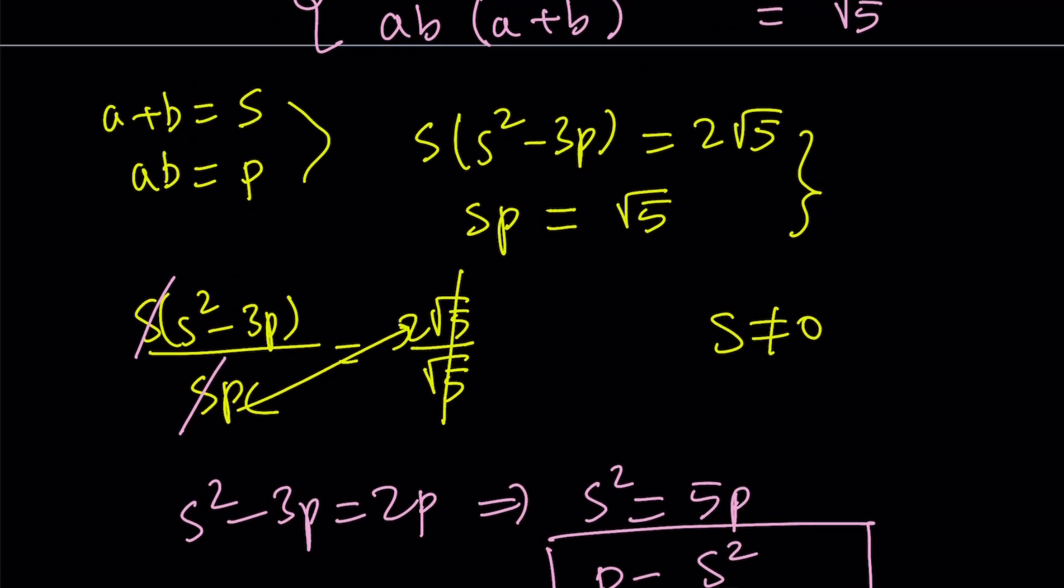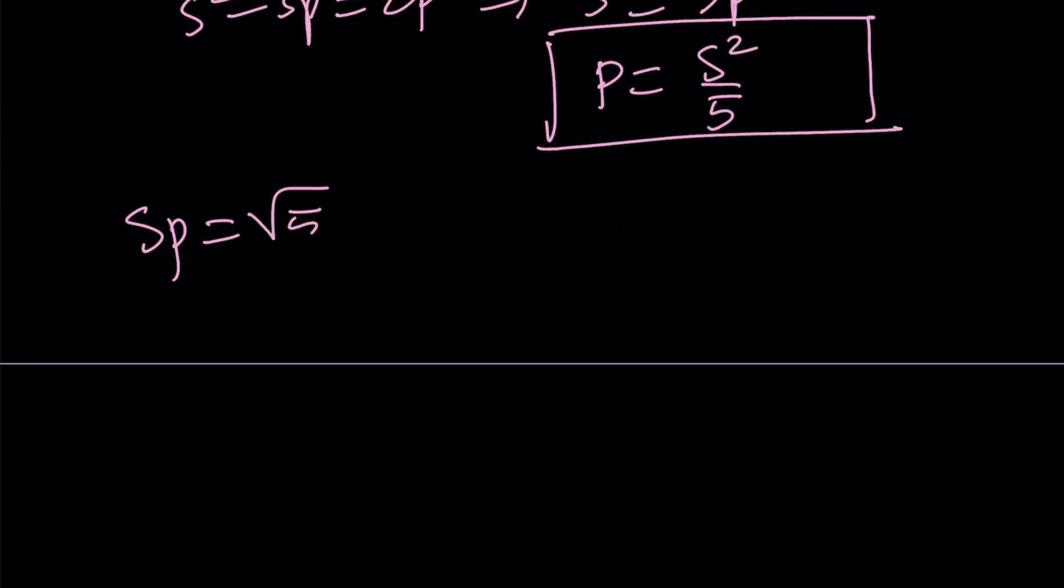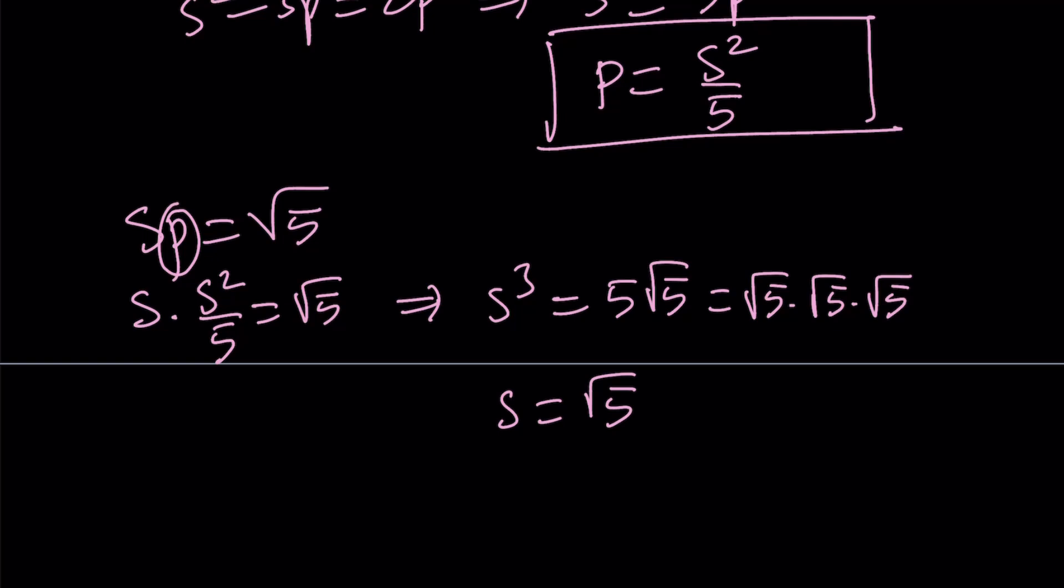We have sp. Remember, the second equation in our system. This one is equal to √5. Now I can replace p with s²/5. s times s² equals s³. If you cross multiply, you're going to get 5√5. If you are familiar with radicals, 5√5 is √5³, because I can write this as √5 × √5 × √5. So that explains why s is equal to √5.